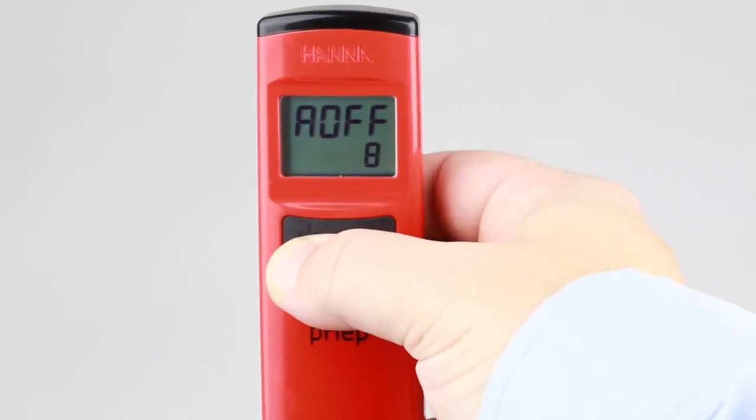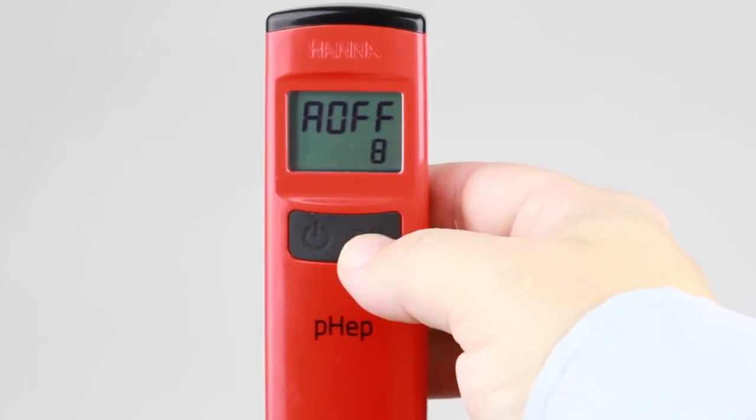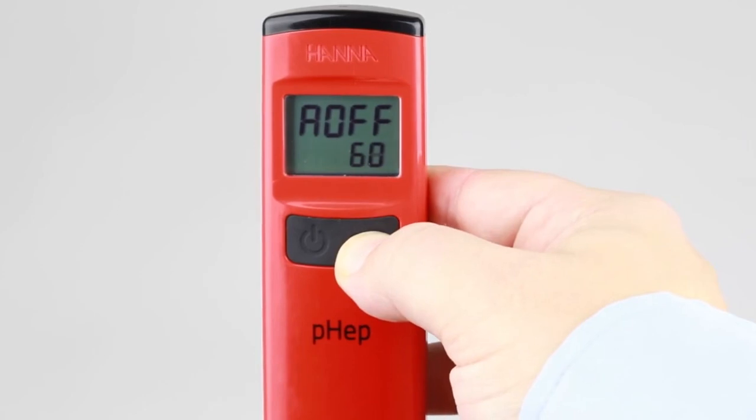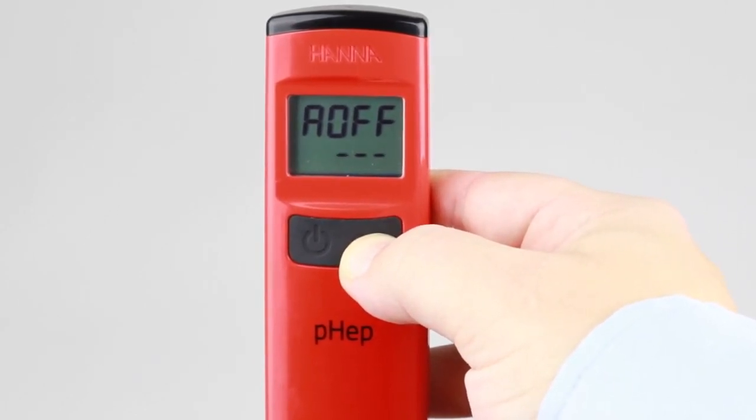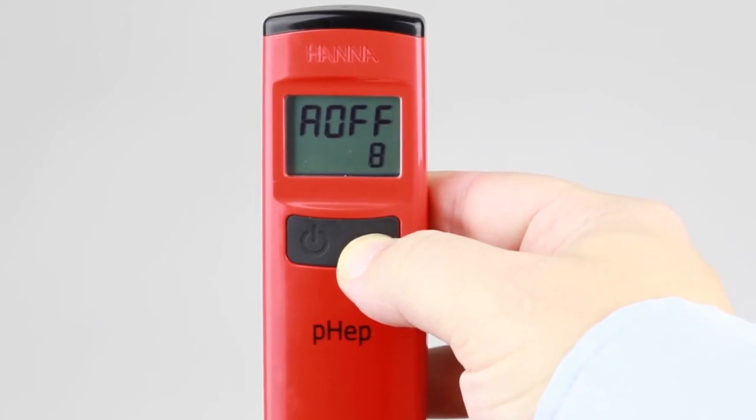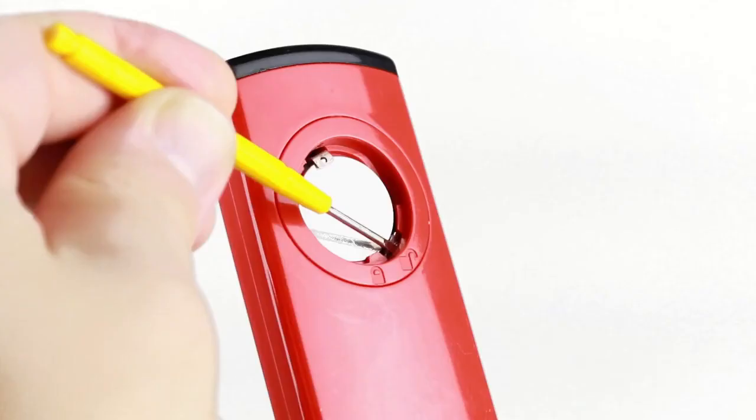Pressing the On-Off button moves to the next setup option, which is for automatic shut-off. The default setting is for 8 minutes. Pressing the Cal button cycles through to 60 minutes, then disabled, and finally back to 8 minutes. Pressing the microswitch again exits the setup mode and the meter is back in measurement mode.